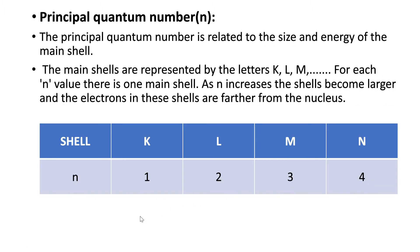Now coming to the principal quantum number, which is denoted by the letter N. It is related to the size and energy of the main shell. The main shells are represented by the letters K, L, M, N, and so on. For each N value there is only one main shell.